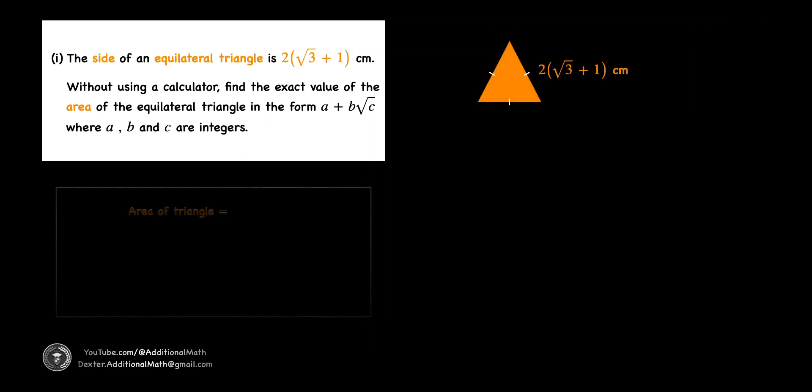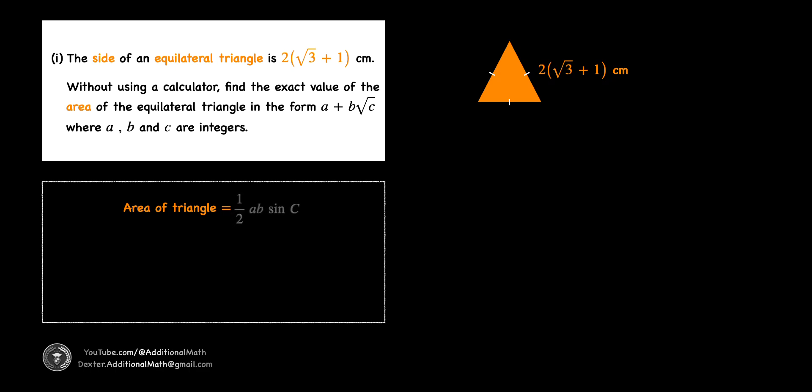The area of a triangle can be found by half times the product of two sides a and b times sine C, the angle between them. We begin by applying this formula where ab is the square of 2(√3 + 1), since an equilateral triangle has equal sides. Then we multiply by sin 60°, the interior angle of an equilateral triangle.